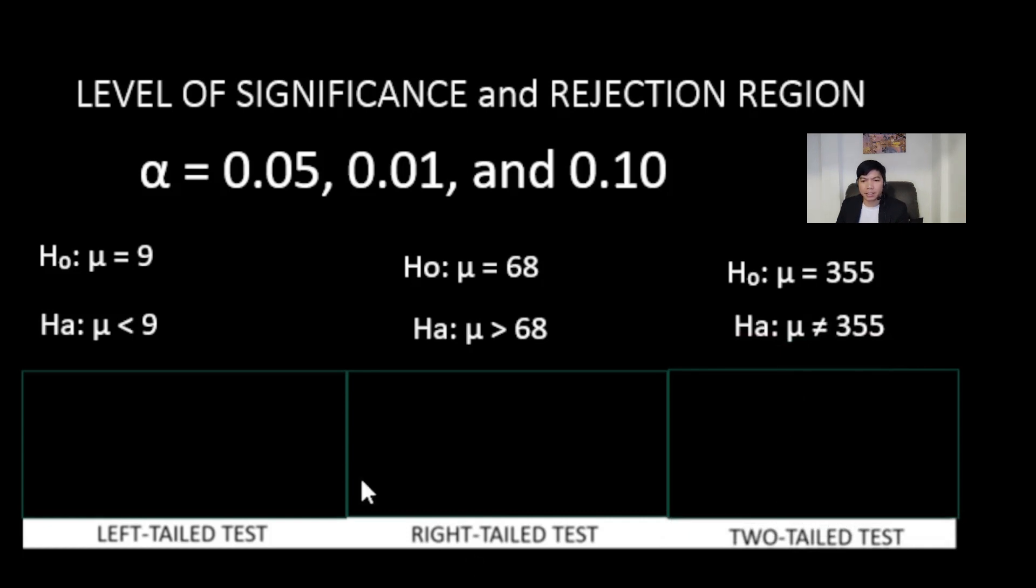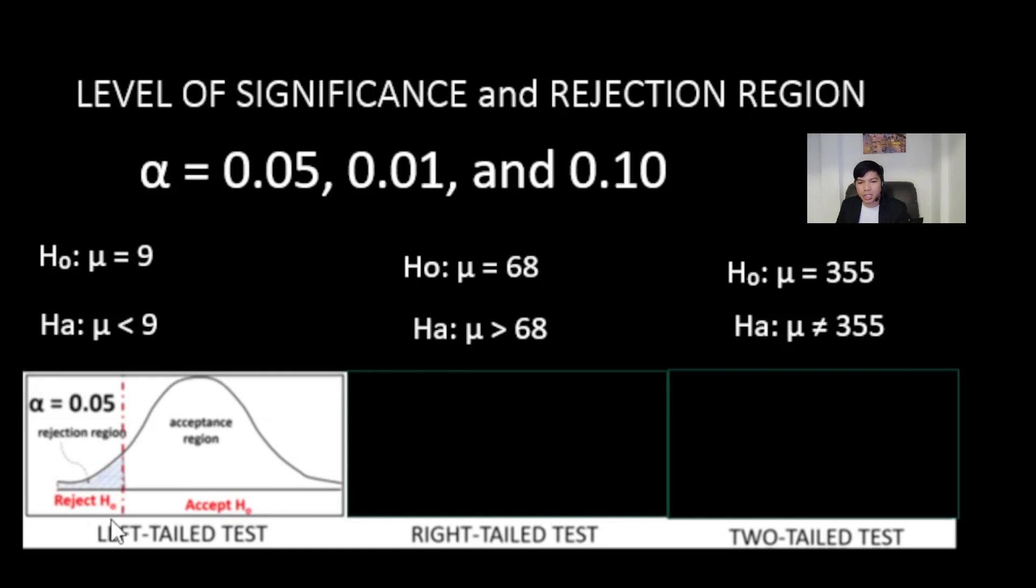Now, let's look at the left-tailed test. The shaded region on the left is the rejection region. The unshaded part is where we don't reject the null hypothesis. The z value that splits the shaded and unshaded regions is the critical point. It decides whether to reject or accept the null hypothesis.